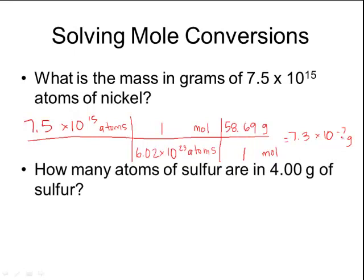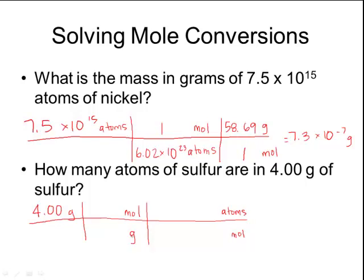One more example. How many atoms of sulfur are in 4 grams of sulfur? Write down the given value: 4 grams. Set up a multi-step T-chart. From grams, go to moles first using sulfur's molar mass of 32.06 g/mol (1 mol = 32.06 g), then convert moles to atoms using Avogadro's number (1 mol = 6.02 × 10²³ atoms). Multiply all top numbers and divide by all bottom numbers to get 7.51 × 10²² atoms.